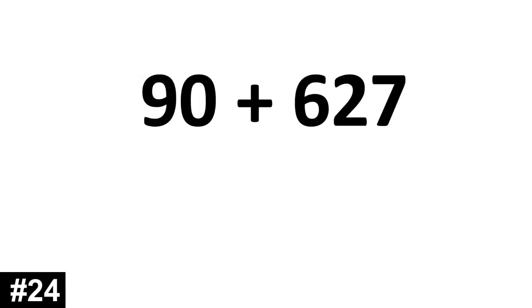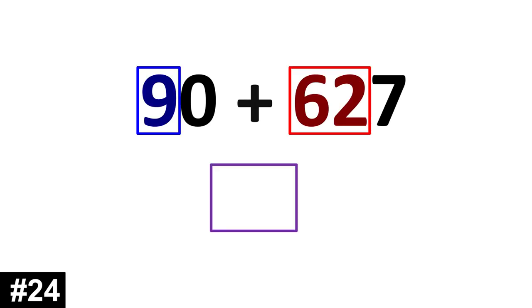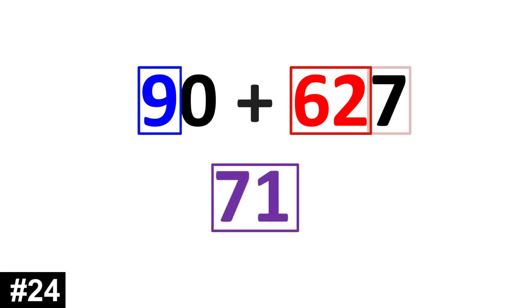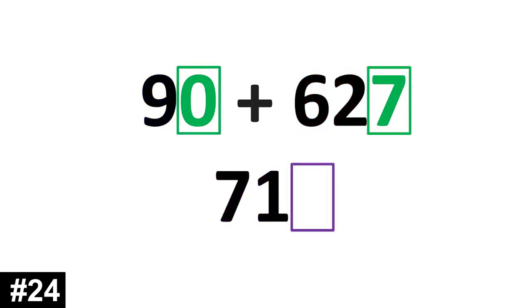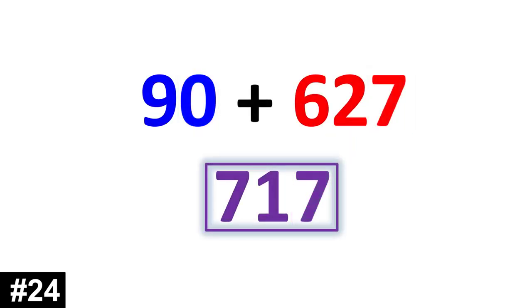90 plus 627. 9 tens plus 62 tens is 71 tens. We look to the ones. 0 and 7 gives us 7. 717.